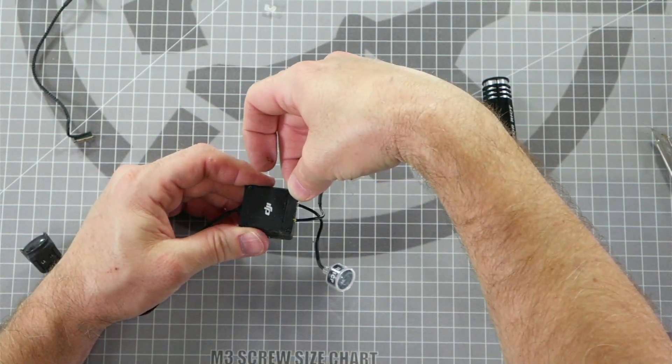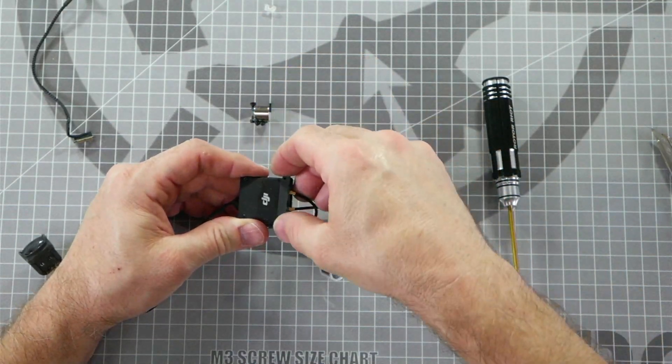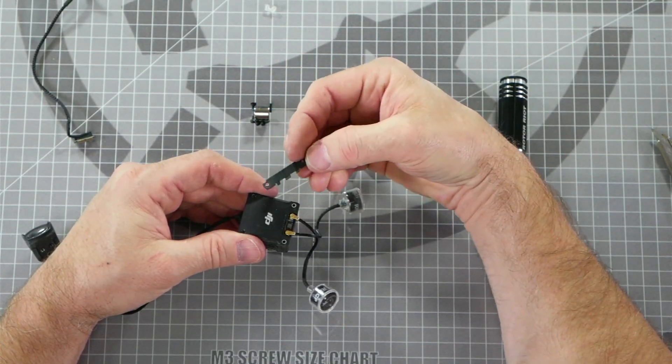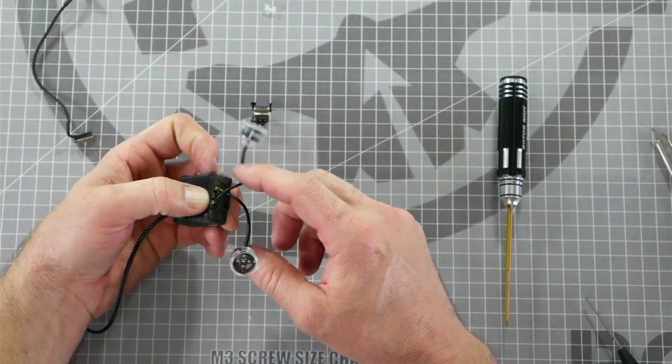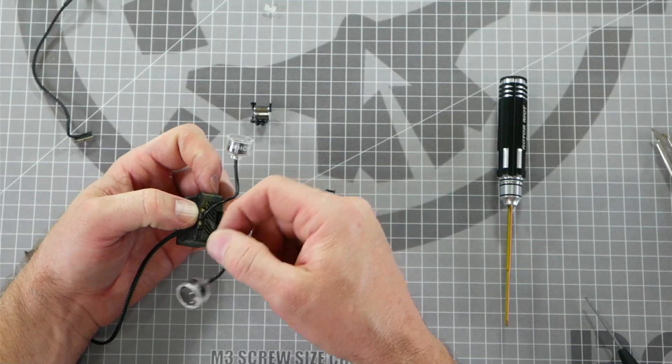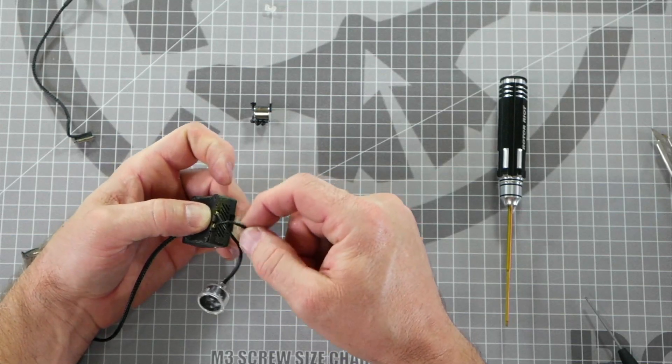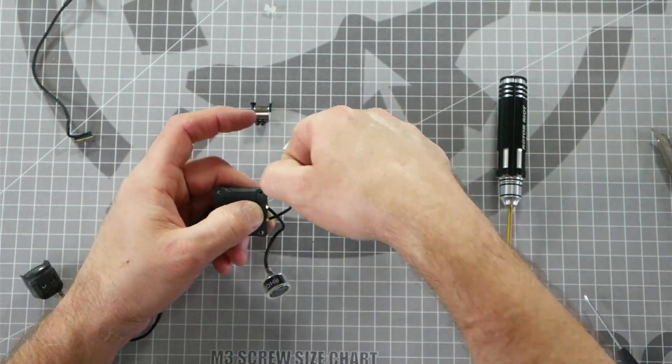Now I can reinstall my metal locking plate. Make sure you reinstall the metal locking plate in this orientation with the tabs facing backwards. Be sure that your antenna connectors don't get in the way of the locking plate tabs and go ahead and install your two Phillips head screws.